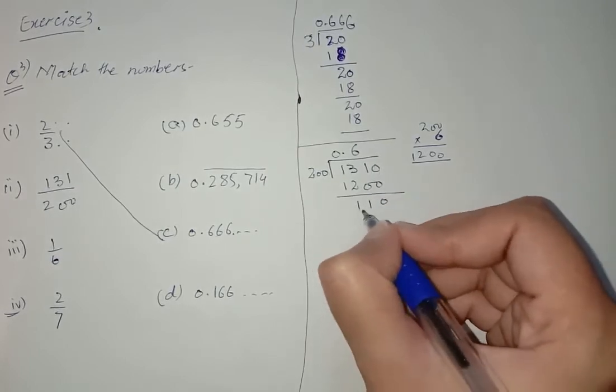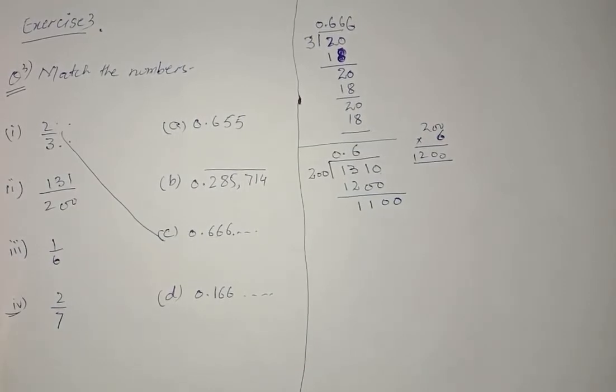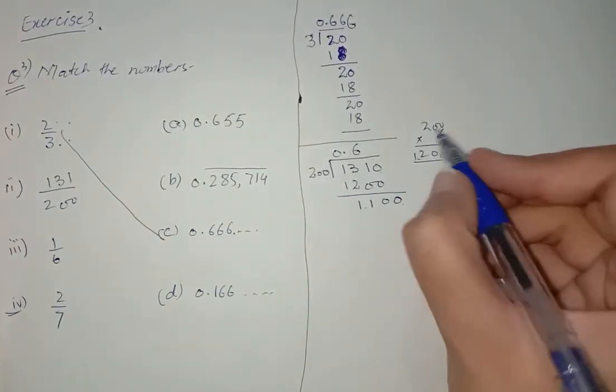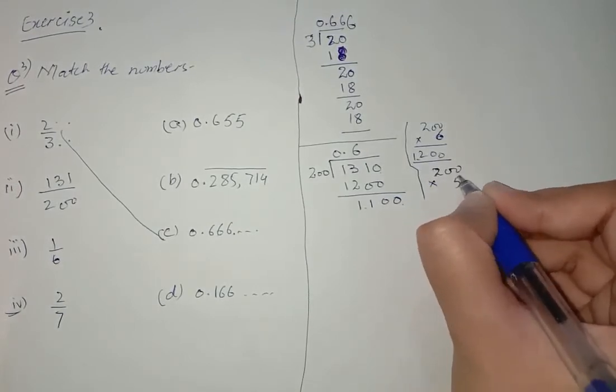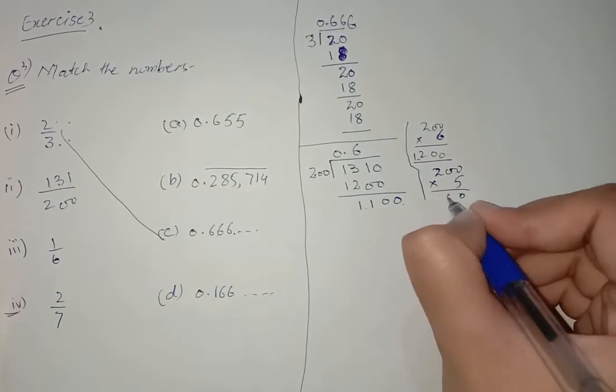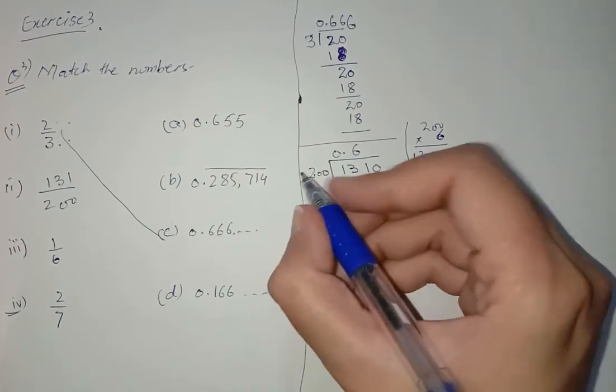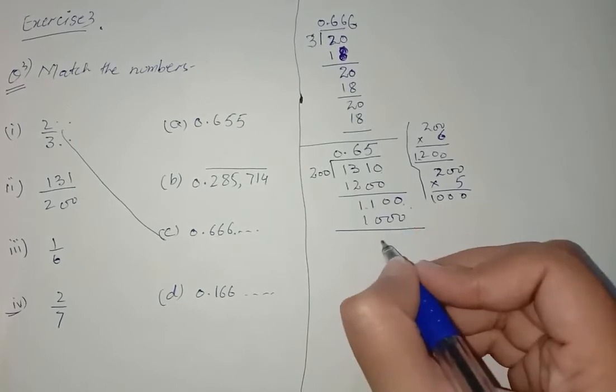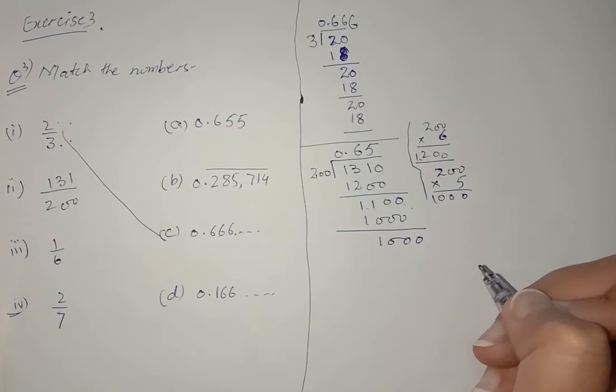1200 is bigger than 1100, so what we can do: we can multiply 200 with 5. 5 times 2 is 10, this is 1000, and this is 1100. So we can place 200 times 5 equals 1000. If we subtract them, the answer is 100. So this matches with A.